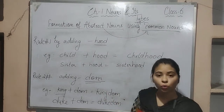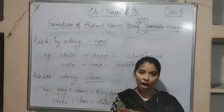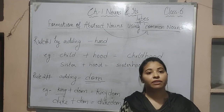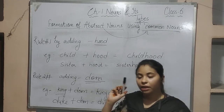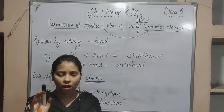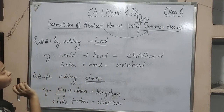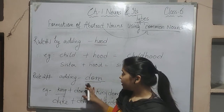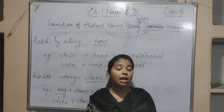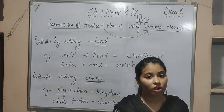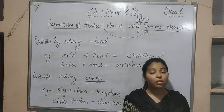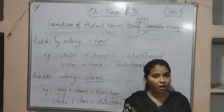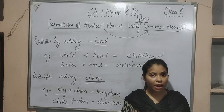Students, these were a few rules and ways of forming abstract nouns — through adjectives (five rules), through verbs (five to six rules), and through common nouns (two rules). I hope you will understand all these terms and rules very clearly. I am going to provide a worksheet in the description box — please download and solve it. Thanks for watching, please like the video and subscribe to our channel.